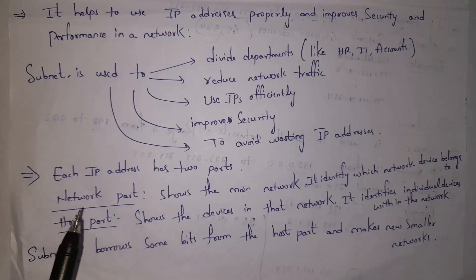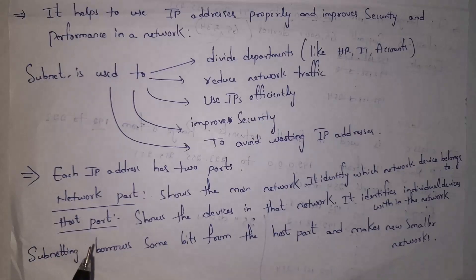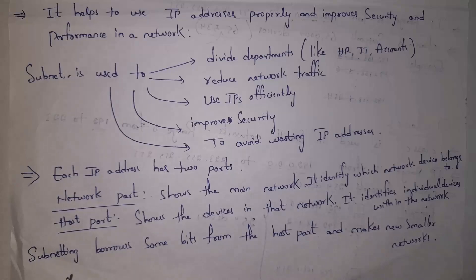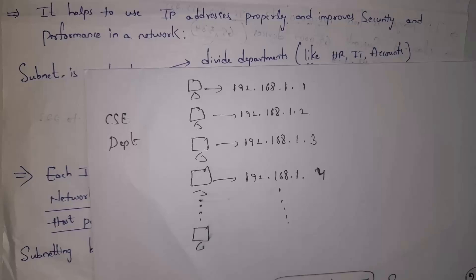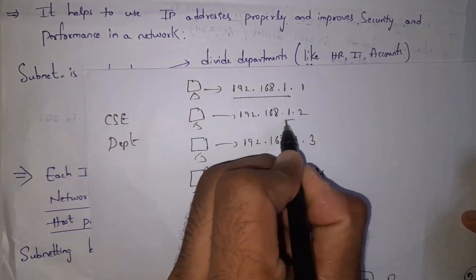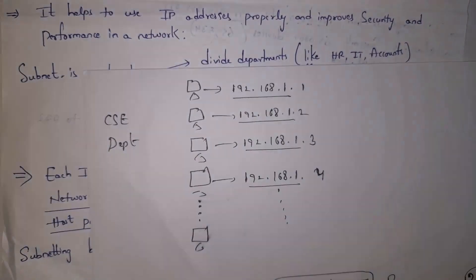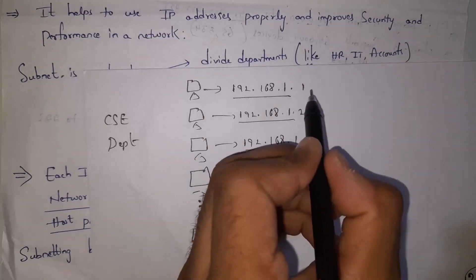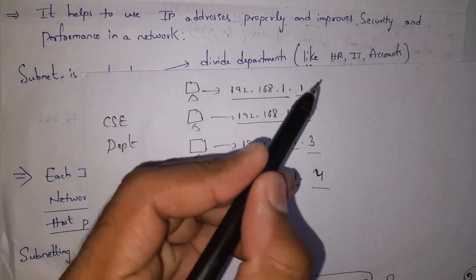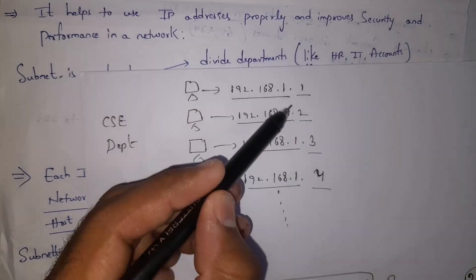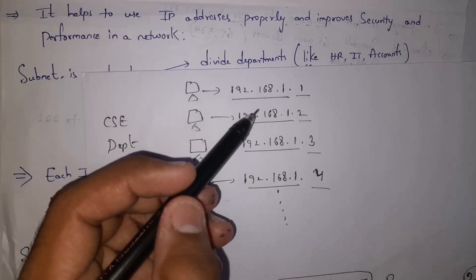Each and every IP address has two parts: one is the network part and the other is the host part. By using the network part we can identify the network — the network part shows the main network and does not change across devices on the same network. By using the host part we can identify individual devices within the network. For example, in a college CSC department, the network part identifies the shared network, while the host part — containing unique numbers like 1, 2, 3, 4 — identifies each individual device.